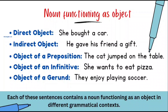Object of an infinitive: 'She wants to eat pizza.' She is the pronoun acting as subject, 'wants' is the verb, 'to eat' is the infinitive (to + base form of verb), and 'pizza' is the noun acting as the object of the infinitive. So nouns can also be objects of infinitives.